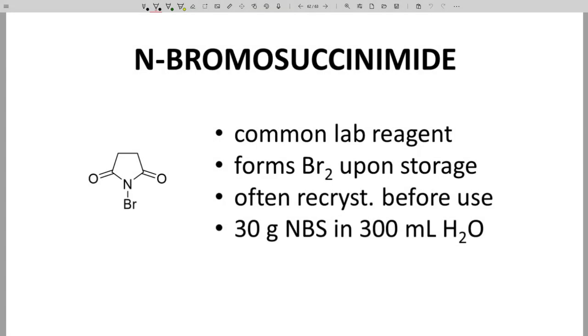We're going to demonstrate a recrystallization of N-bromosuccinimide. This is a common lab reagent that tends to release bromine upon storage. The impure material gains a yellow color. Researchers often recrystallize NBS before use, and the standard recipe is 30 grams NBS in 300 milliliters of water. A reference to this procedure is in the video description.